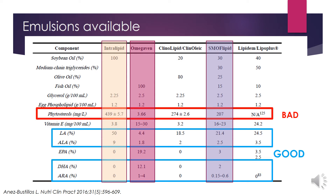This is where Omegaven comes in. As demonstrated in this table, Intralipid, shown in the orange box, is 100% soybean oil and has a high concentration of phytosterols. Smoflipid, in the purple box, is a combination of soybean, medium chain triglycerides, olive, and fish oils, and has less phytosterol concentration than Intralipid. But Omegaven, in the pink box, which is 100% fish oil, has the lowest concentration of phytosterols.